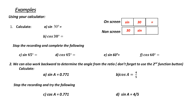If we punch sine of 30 degrees equals, we should get an answer of 0.5. Now, if we use cos of 30 degrees and punch it into our calculator, we should get 0.8660. Again, we would punch in cos 30 equals.